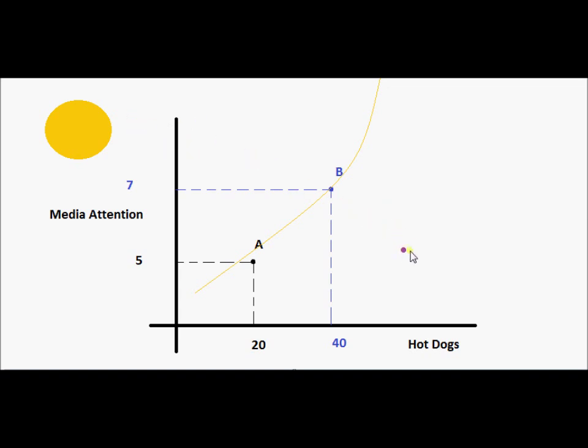Actually, the direction of better or higher utility is up and to the left. Now that hot dogs are a bad, that would be the way we would conceptualize that.